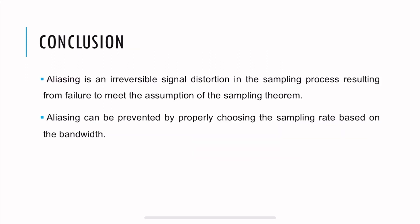So to conclude, aliasing is an irreversible signal distortion in the sampling process resulting from failure to meet the assumption of the sampling theorem or the Nyquist criteria. Aliasing can be prevented by properly choosing the sampling rate based on the bandwidth. Alright, thank you for watching this video. I hope you enjoyed it. Have a great day.